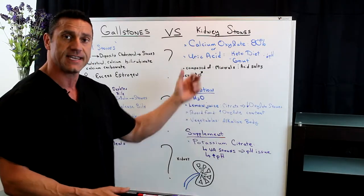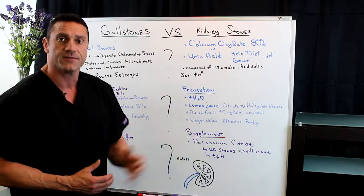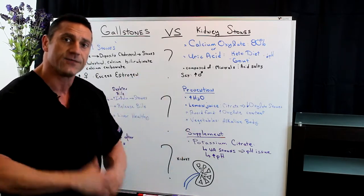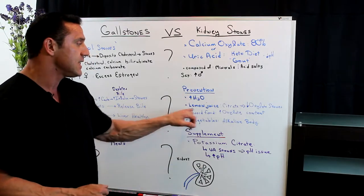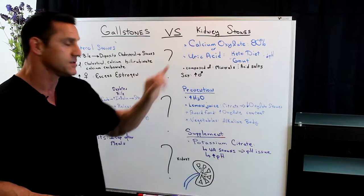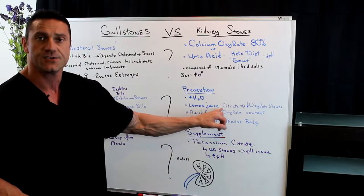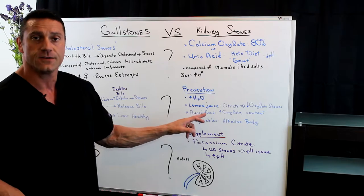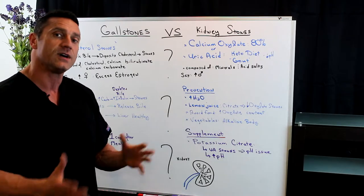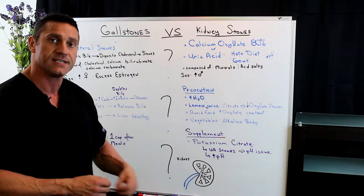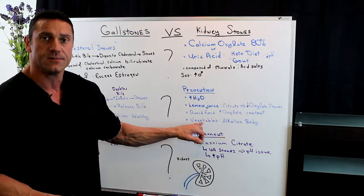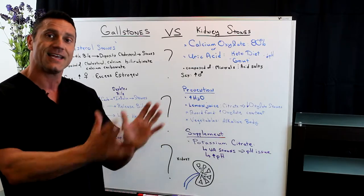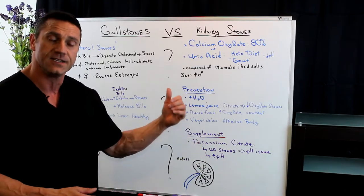For the sexes, males will typically get kidney stones. To prevent kidney stones, it's very simple: increase your water consumption to help flush out the kidneys. Also, lemon juice — if you're prone to calcium oxalate or uric acid stones, lemon juice has citrate, which will lower the chances of oxalate stones forming. Avoid foods with high oxalate content, because you do not want to make your body too acidic — that's where stones are formed. Vegetables are a must because they alkalinize the body, making you less acidic and reducing the chances of kidney stones.